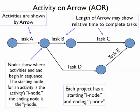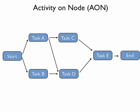Each project using the activity on arrow diagramming technique will have a starting I node and an ending J node. This technique was used a lot, especially in software planning, but it's not used quite as much anymore. The dominant technique now seems to be the activity on node, so let's explore that in more detail.